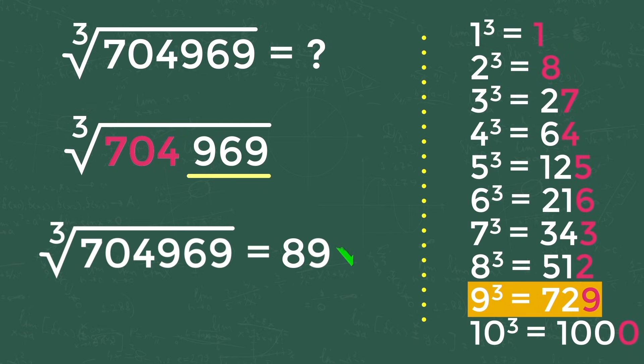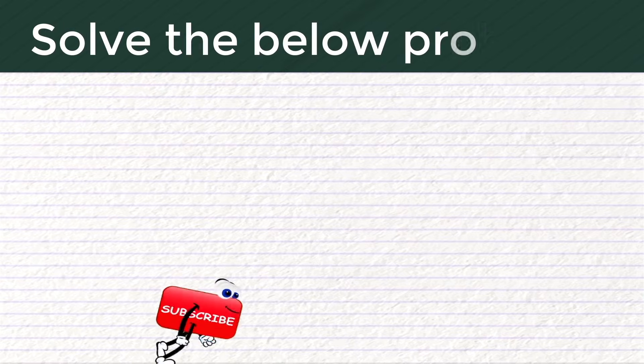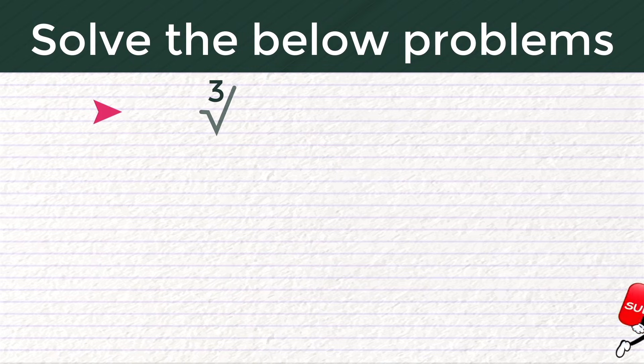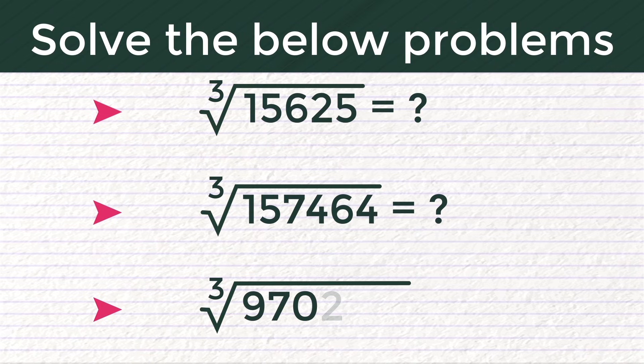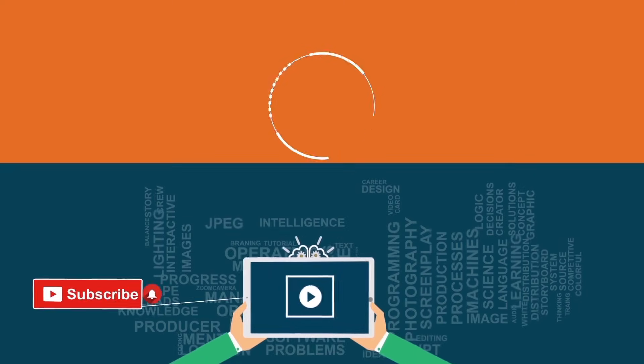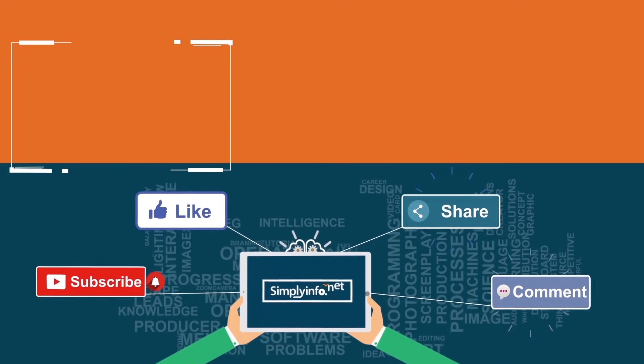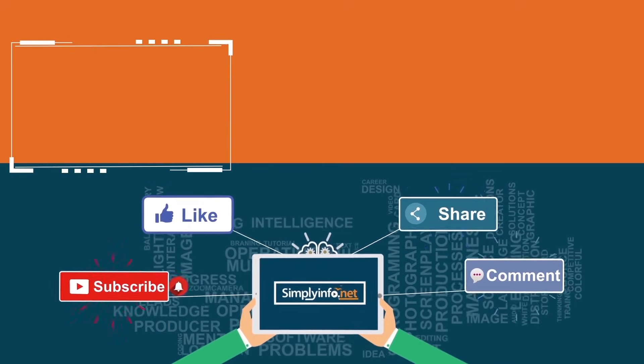So the answer is 89. See how simple it is! If you understand the trick, try solving the below numbers and comment us the answers. What is the cube root of 15625? What is the cube root of 157464? And what is the cube root of 970299? Please subscribe for more videos. Click the bell icon for updates.